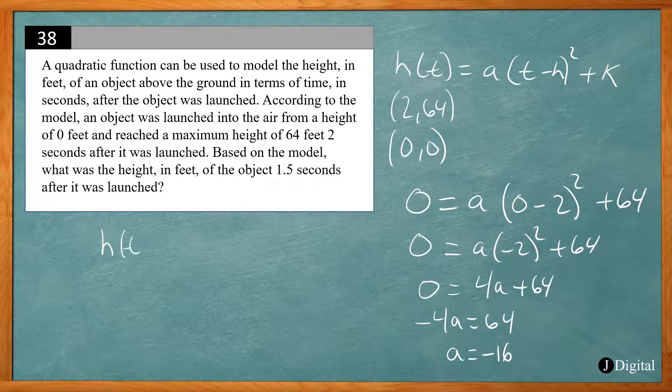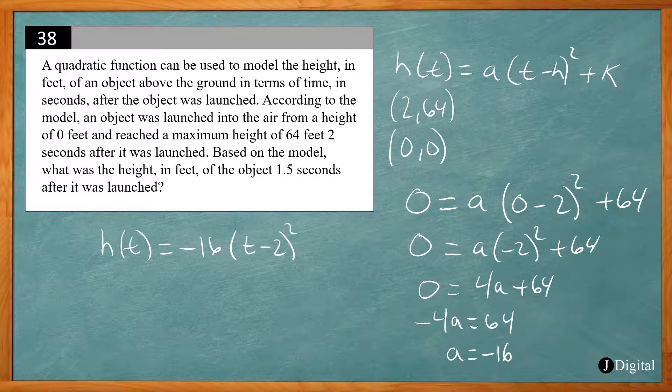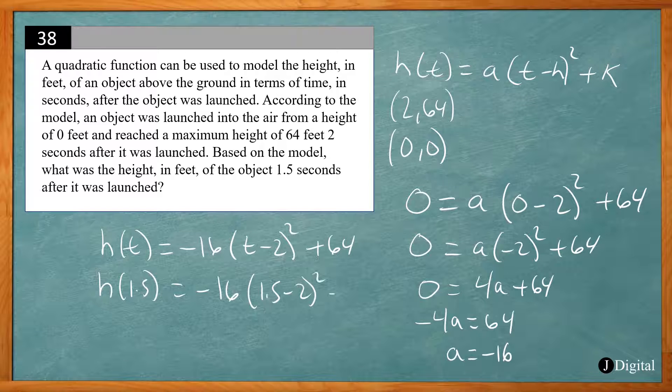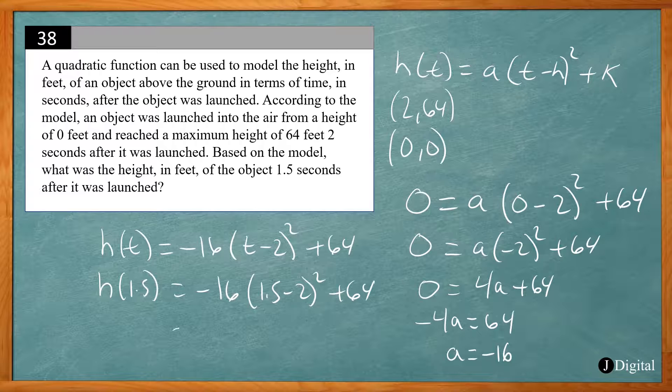So now we have h(t) equals negative 16(t - 2)² plus 64. And we want to find the height after 1.5 seconds, so that's h(1.5). So again, that's going to be negative 16 times (1.5 - 2)² plus 64, which becomes negative 16 times (-0.5)² plus 64. And you can put this in your calculator, and you get 60.